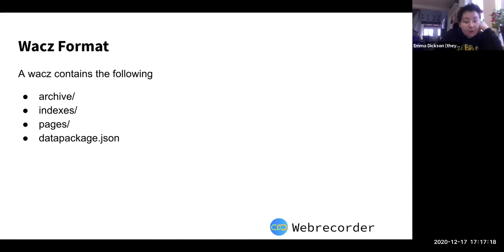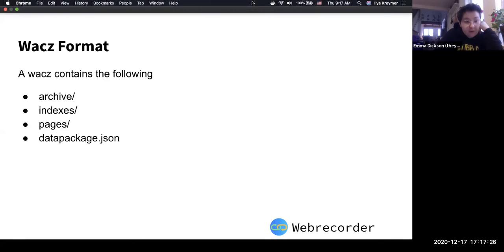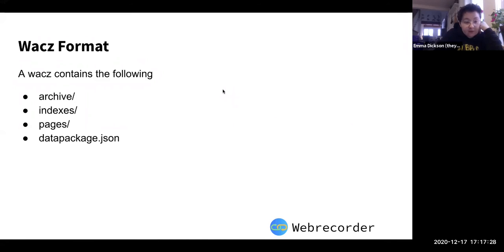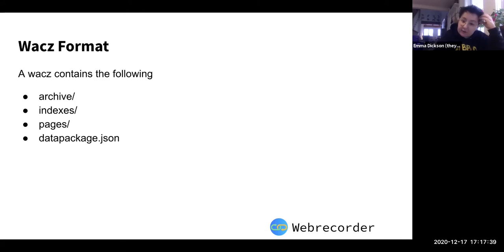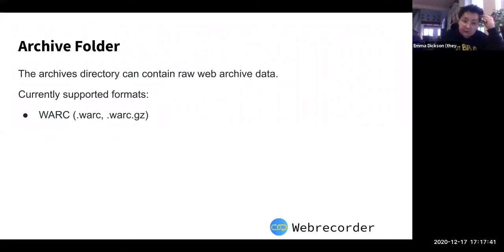WACZ, like Ilya's been saying, is basically in the simplest terms a zipper for a WARC file. If you were to unzip a WACZ file you would get an archive folder, an indexes folder, a pages folder, and a datapackage.json. I'm going to explain what purpose all of those serve.